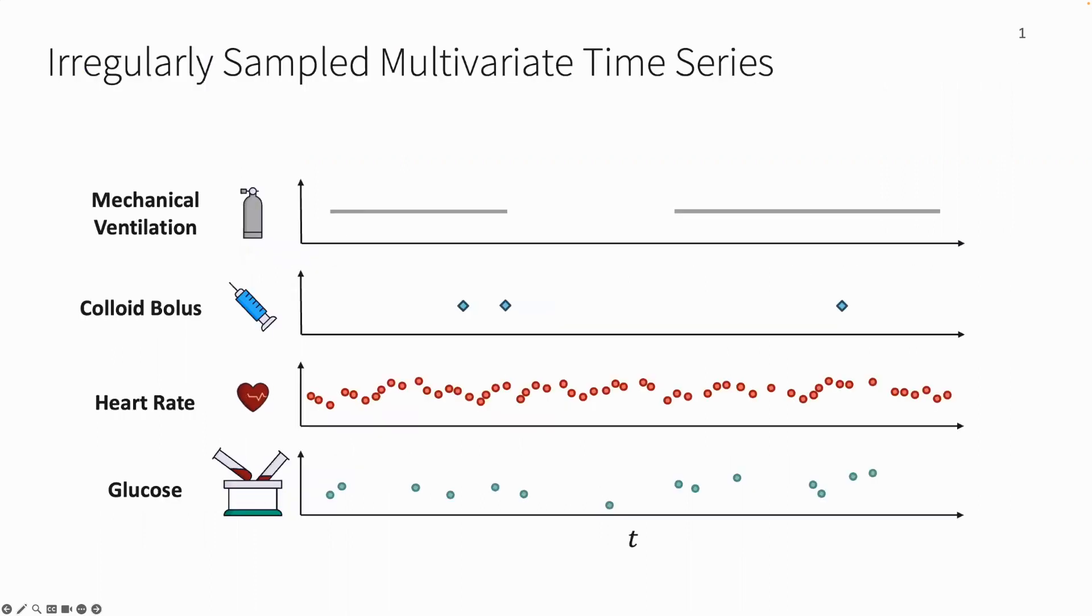Irregular time series data is prevalent across various domains, especially in the healthcare field. For instance, some physiological indicators like heart rate and clinical interventions like mechanical ventilation are irregularly measured and issued.